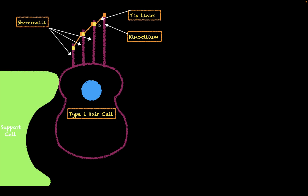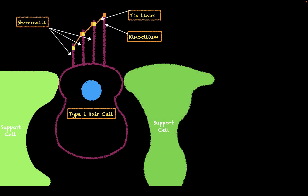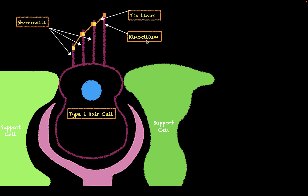In addition to the hair cells, we also have support cells, and these support cells form tight junctions with the hair cells. One of the other distinctive features of the type one hair cell is that the afferent dendrites that innervate them completely envelop their bases. We also have an efferent axon here as well.